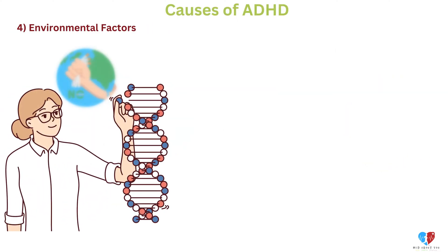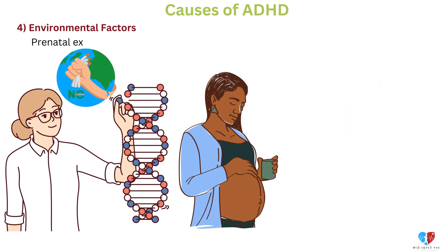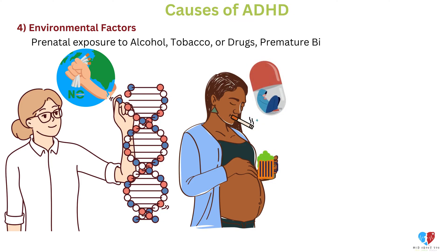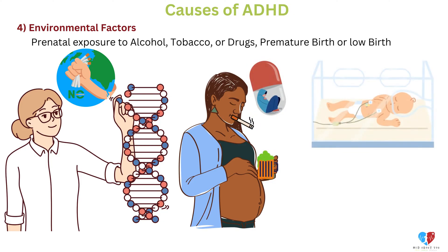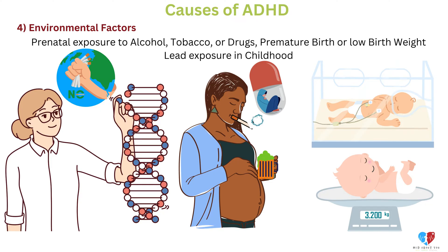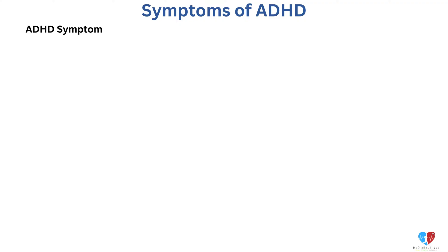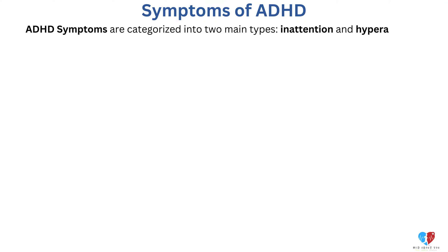4. Environmental factors. Prenatal exposure to alcohol, tobacco, or drugs. Premature birth or low birth weight. Lead exposure in childhood. 5. Symptoms of ADHD. ADHD symptoms are categorized into two main types: inattention and hyperactivity-impulsivity.